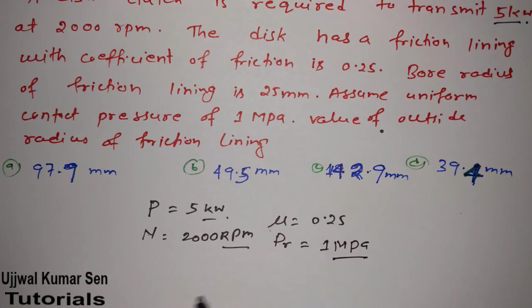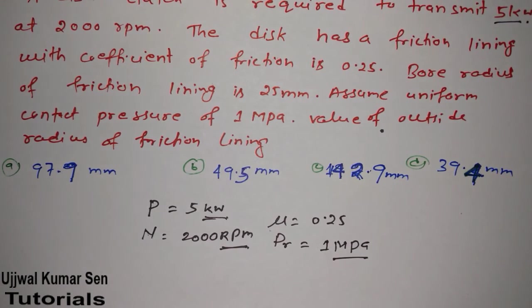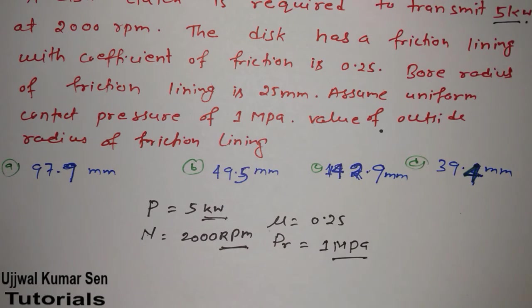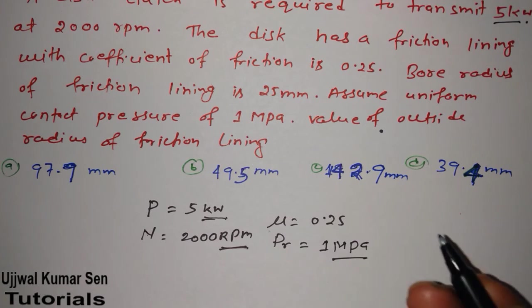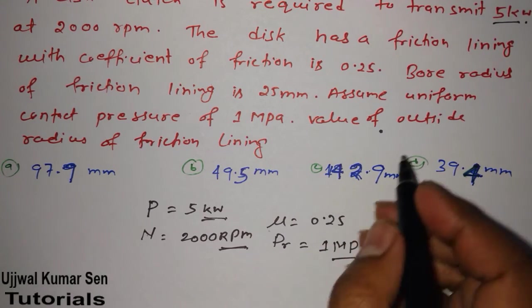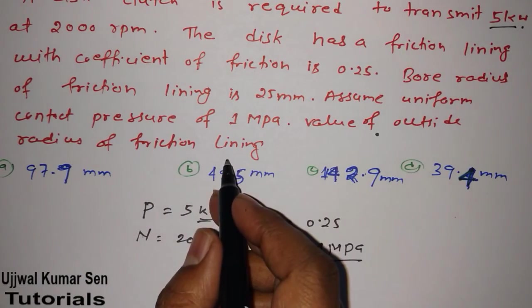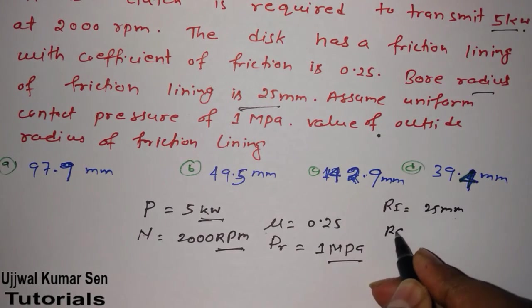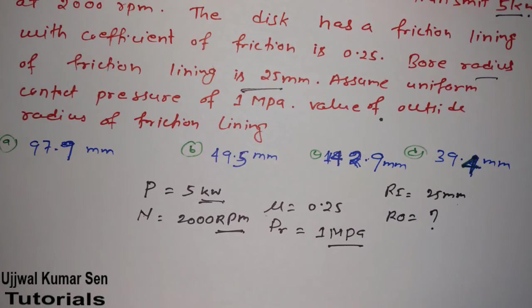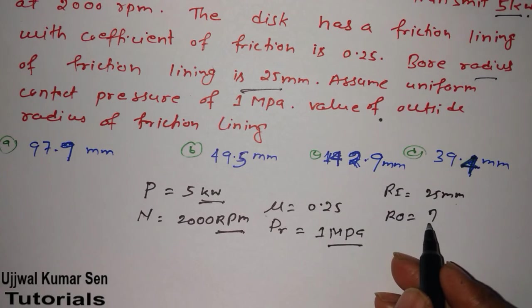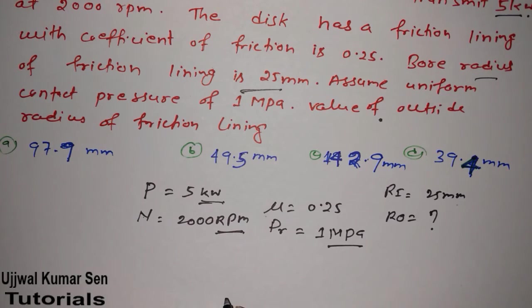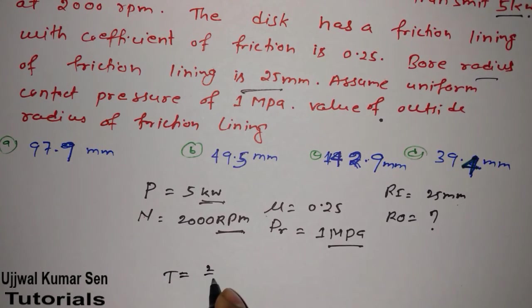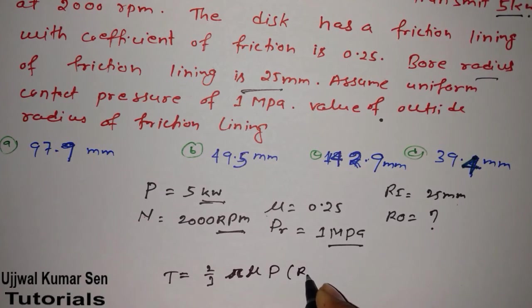The pressure given is 1 megapascal. Always focus on units — coefficient of friction is dimensionless. The bore radius, which is the inside radius, r_i = 25 mm. We need to find the outside radius r_o. For finding the outside radius, we use the uniform pressure theory formula.